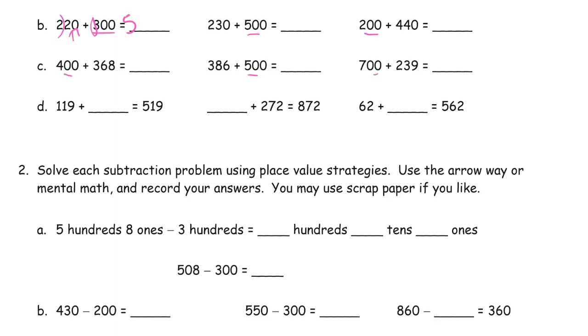And these are all gonna be just adding hundreds like 500, 200, 700, 400. So this is 520. 230 plus 500, adding the hundreds at 700 and then the 30, 730.